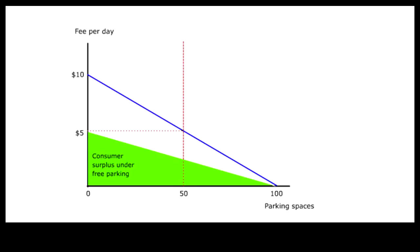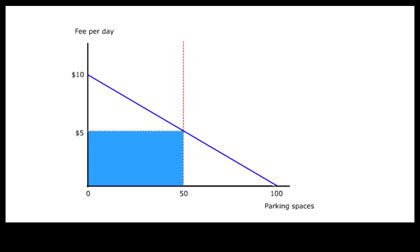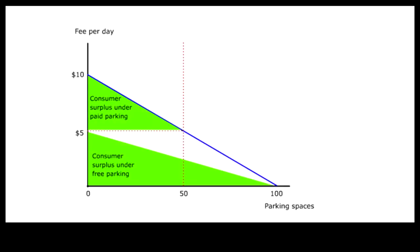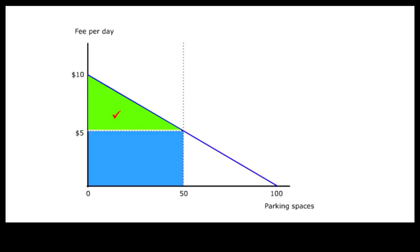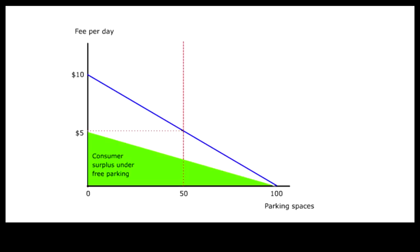It turns out that the large green area is equal in area to the blue area. So the total benefit under paid parking exceeds the total benefit under free parking by the consumer surplus under paid parking. Sure enough, consumer surplus under free parking exceeds consumer surplus under paid parking, but it is total benefit that counts.